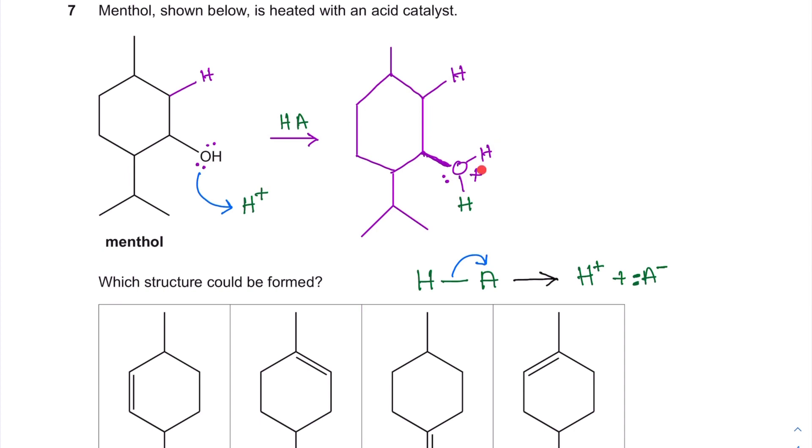And that O is now with a plus. So now this O is going to leave. And the A minus will pick up that H. And this will break down to form a double bond here, a pi bond.